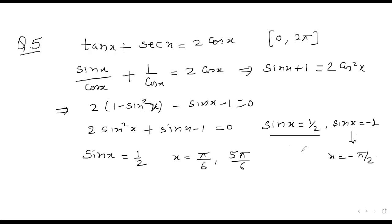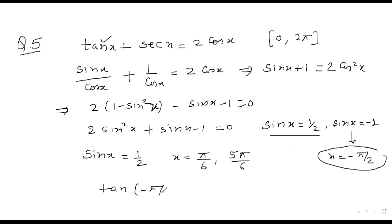However, when we substitute x = 3π/2 into the original equation, tan(3π/2) gives minus infinity, so this value cannot be included. Therefore only the two values from sin x = 1/2 are valid, giving two solutions.